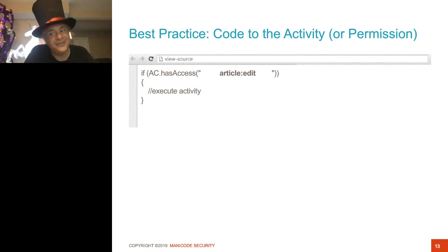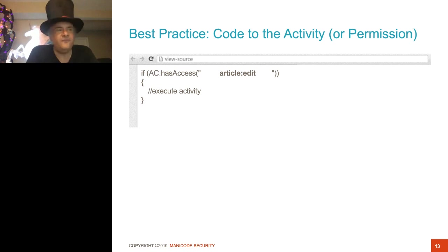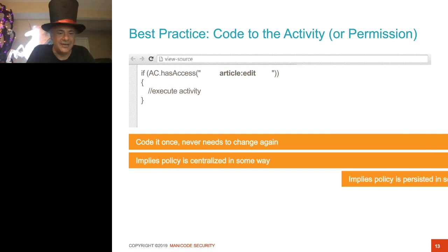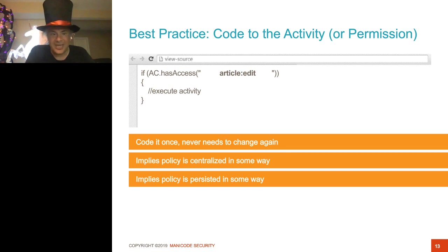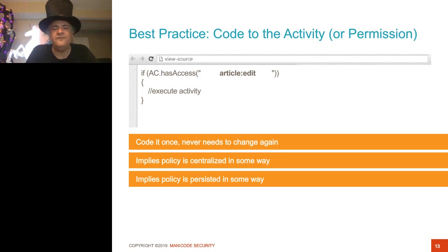When I am actually going to enforce access control in my software, I want to do it by the activity name itself. So I'm saying: if the user has access to edit the article, let them do it. This check has nothing to do with user metadata — it's just checking what feature is being executed. I can code it once and never have to touch it again. It also implies policy is centralized under a 'has access' function or in a database. I need to look up a data store and look up the policy before I make a decision. This is the heart of modern access control.